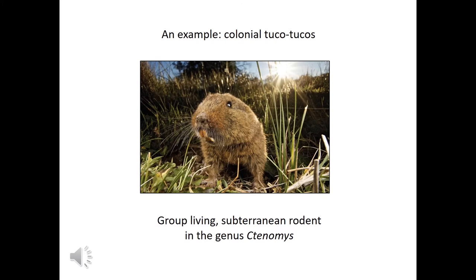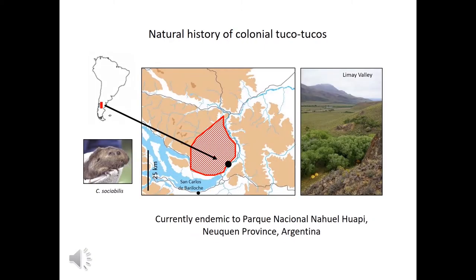Let's explore these ideas using examples drawn from my research program. The focus of my research is the Colonial Tuco-Tuco, a group-living, subterranean species of rodent in the South American genus Ctenomys. To give you a taste of the natural history of the Colonial Tuco-Tuco, these animals are endemic to a roughly 1,500 square kilometer area in southwestern Argentina, all of which is contained within Parque Nacional Nahuel Huapi.